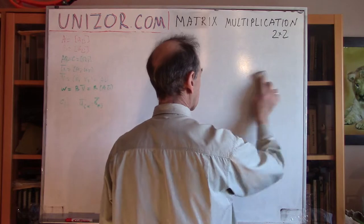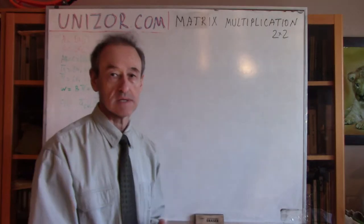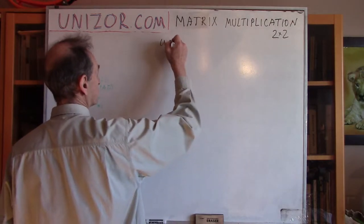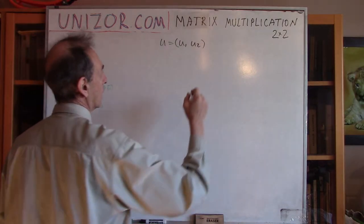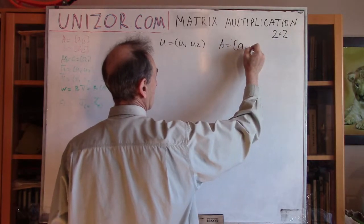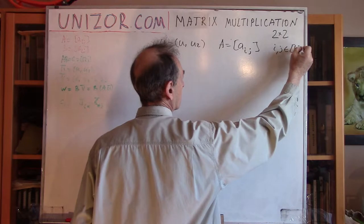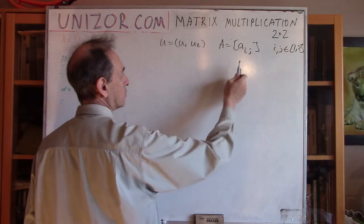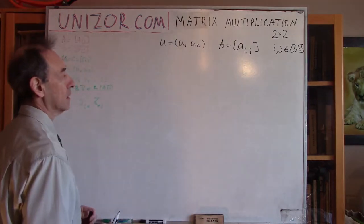We would like to define a two-by-two matrix product in such a way that these conditions are satisfied. We start with a vector U = (U1, U2) and matrix A with elements A_ij where i and j belong to {1, 2}. So it's a two-by-two matrix: A_11, A_12, A_21, A_22 — that's how the elements of matrix A are allocated.